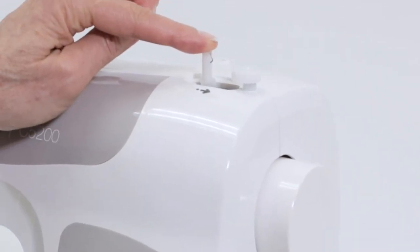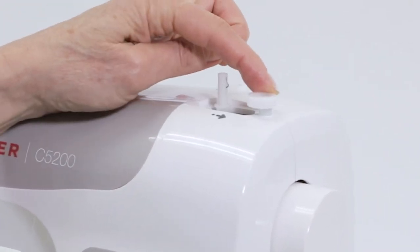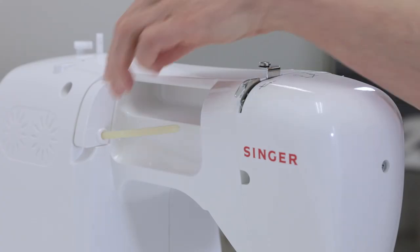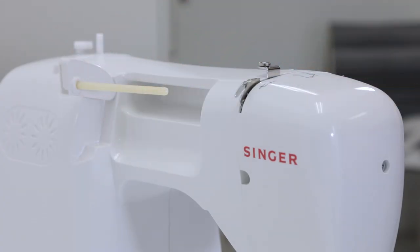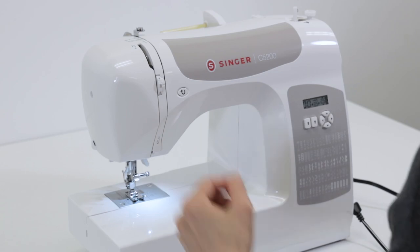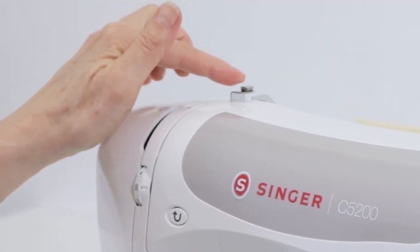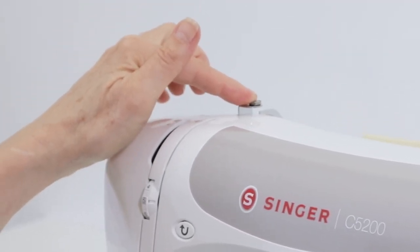Up here is your bobbin winding spindle and your bobbin winding stopper. Back here is your spool pin, thread guide, and bobbin winding tension disk.